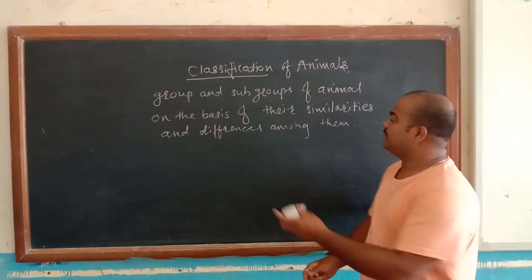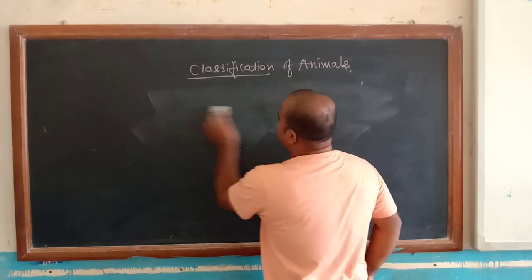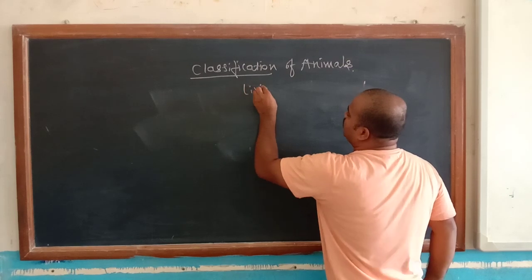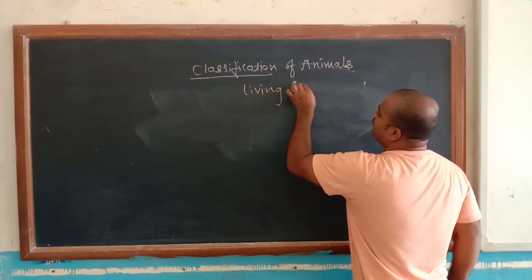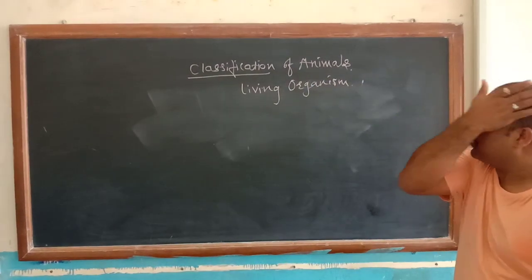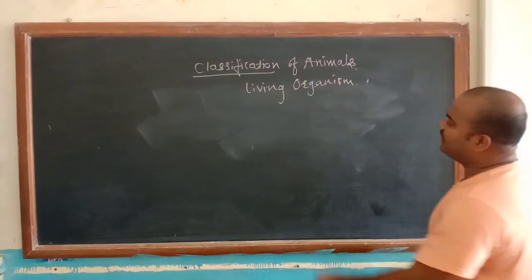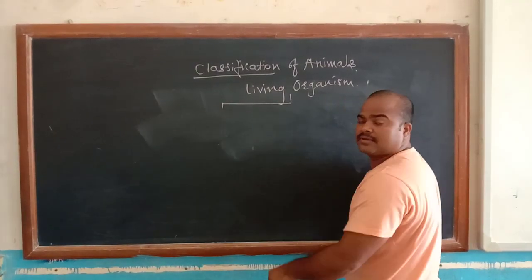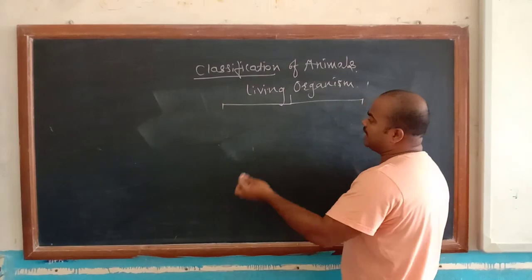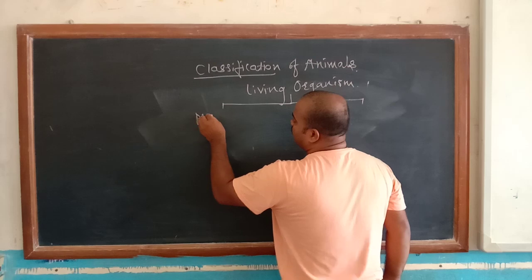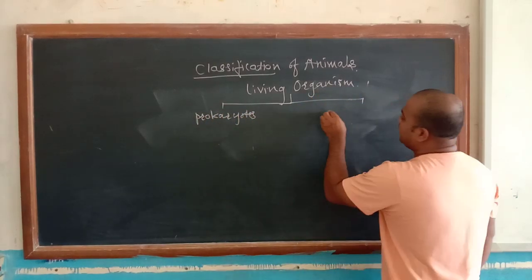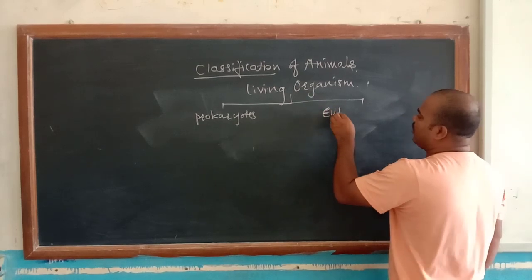Next we will start. In our book, they are given a chart. It looks like living organisms. In that living organism, they are categorized into two types: one is prokaryotes and second one is eukaryotes.